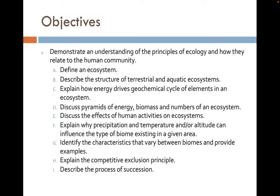You should be able to define an ecosystem, describe the structure of terrestrial and aquatic ecosystems, and explain how energy drives geochemical cycles of elements in an ecosystem. You'll be able to discuss pyramids of energy, biomass, and numbers of an ecosystem, and discuss the effects of human activities on ecosystems. You'll also be able to explain why precipitation, temperature, or altitude can influence the type of biome in an area, identify characteristics that vary between biomes, explain the competitive exclusion principle, and describe the process of succession.